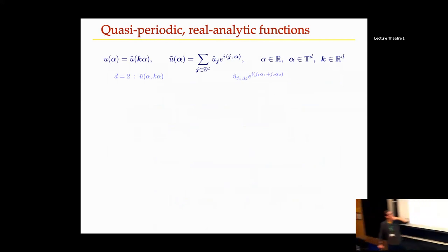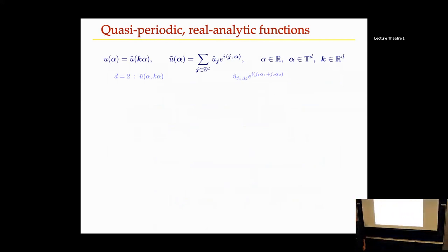U-tilde is periodic in both slots on a two-dimensional torus. We take K1 equals one and K2 equals K, giving a certain slope through the torus. If K is irrational, moving along that direction will wrap around the torus and get arbitrarily close to any point. So from a periodic function on the torus, you get a quasi-periodic function on the whole real line.